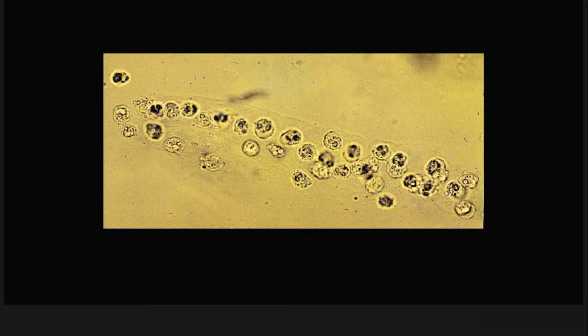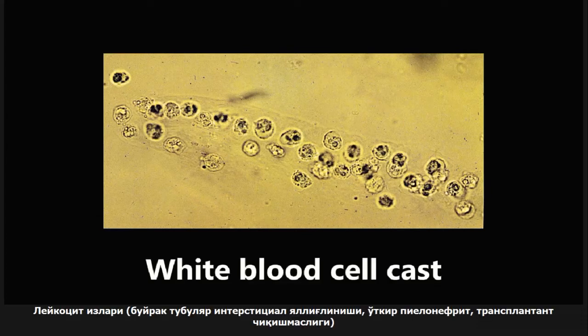This next one is an example of a white blood cell cast. It's usually seen in tubulo-interstitial inflammation — inflammation of the tubules in the kidneys as well as the interstitial area. It's also seen in acute pyelonephritis and in transplant rejection.